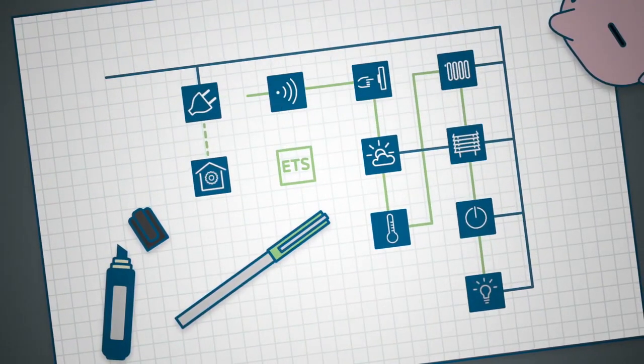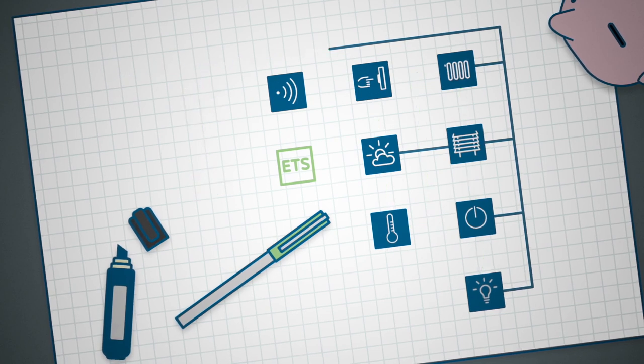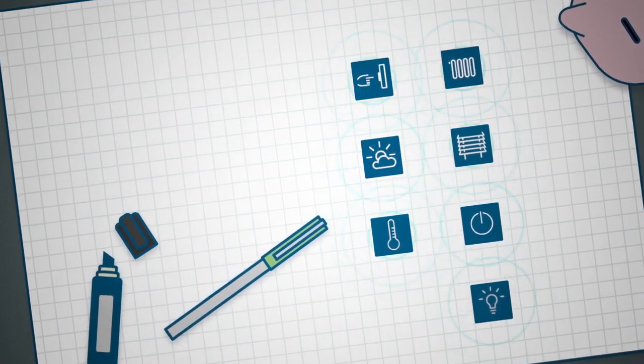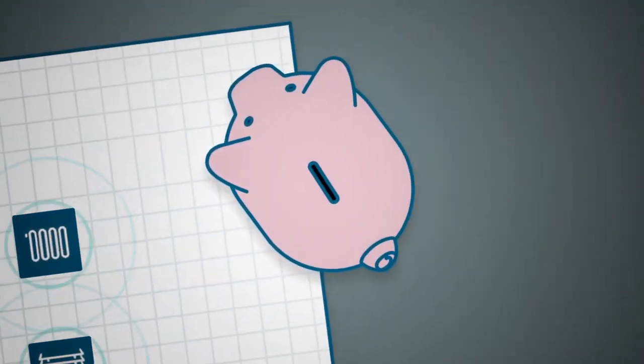Without KNX cable, without a control center and power supply in the consumer unit, without media coupler and above all without ETS. Getting started with a smart home can be so easy and future proof, and so affordable.